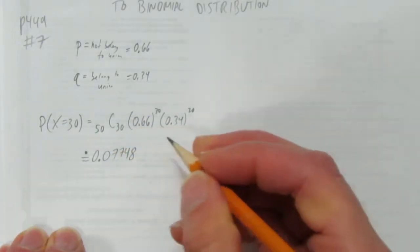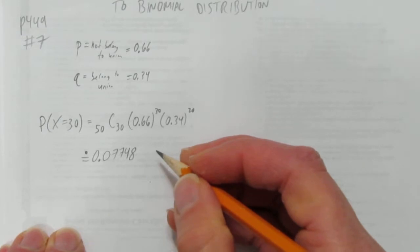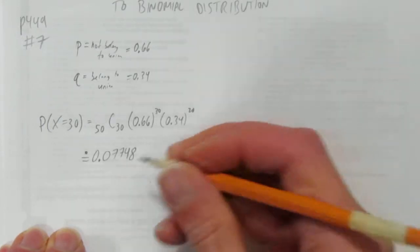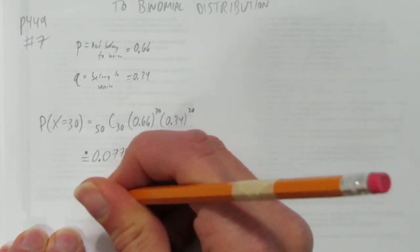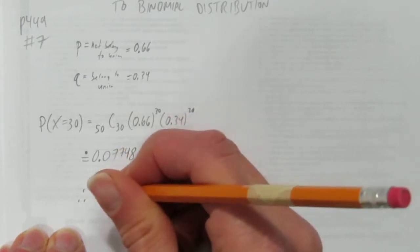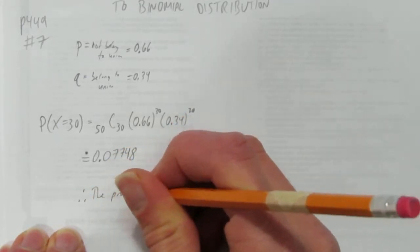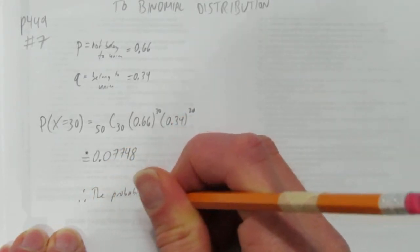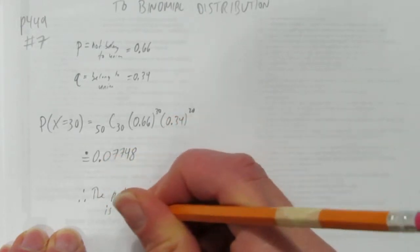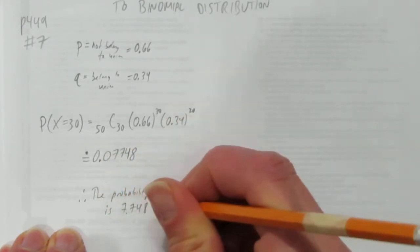So we can put a therefore statement. The real question is through the comparison. Let's put a therefore just in case. The therefore statement is, the probability is, and move the decimal over twice for a percentage, 7.748%.